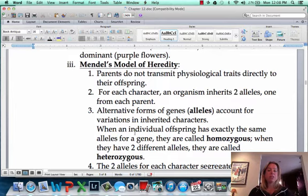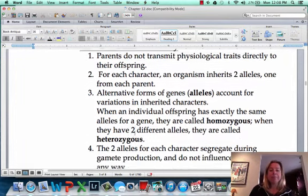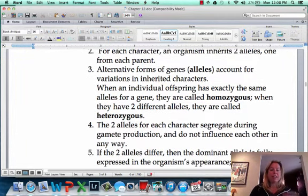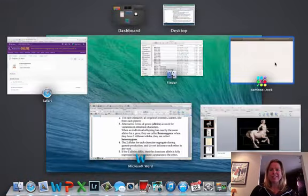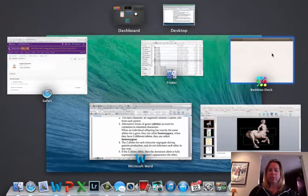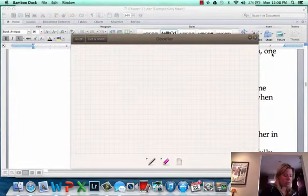Alternative forms of genes are called alleles, and we can call the genetic makeup of an organism homozygous or heterozygous. I think this is easiest if we just use letters, so I can show you what I'm talking about.